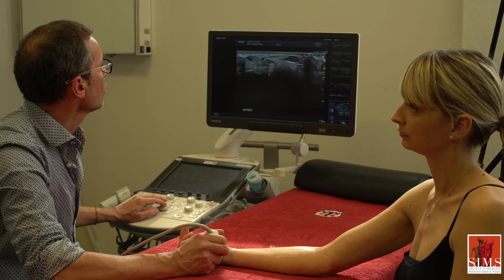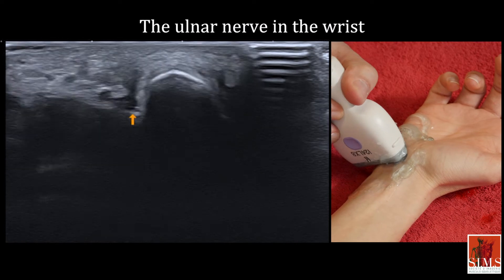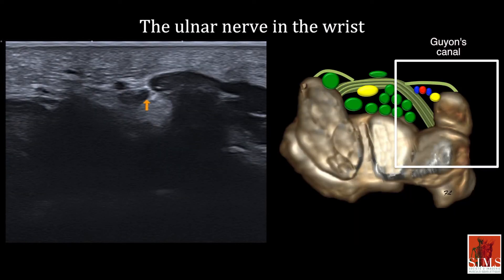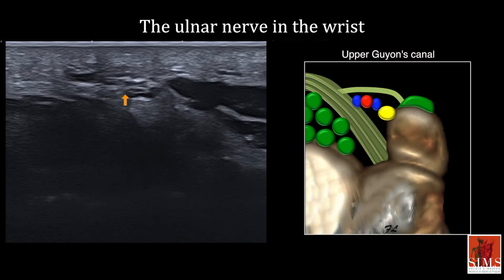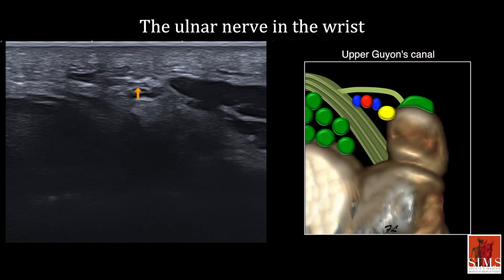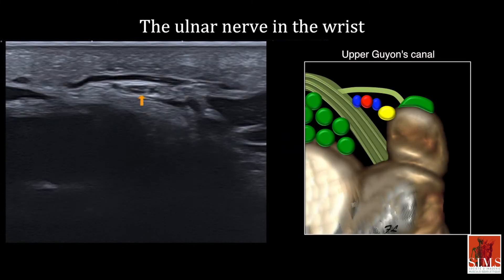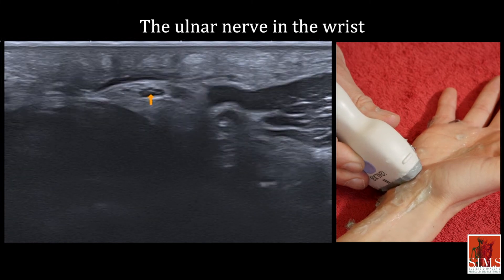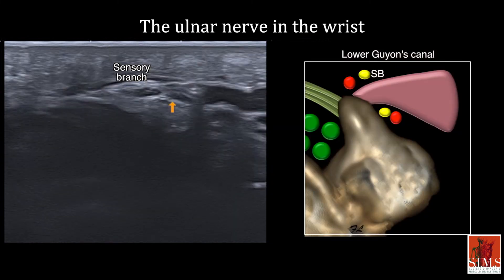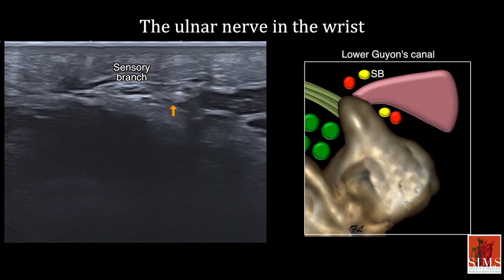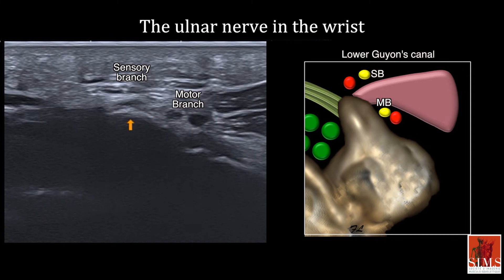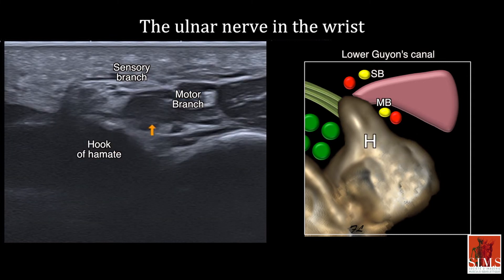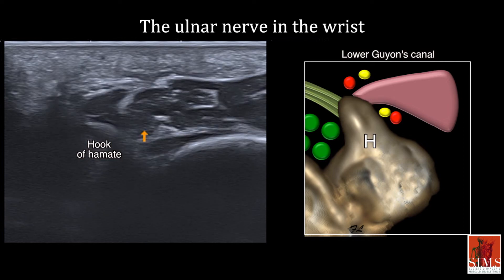At the wrist, the ulnar nerve heads towards an osteofibrous tunnel, Guyon's canal, and runs alongside the ulnar vessels. The terminal division of the ulnar nerve consists of a sensory branch and a motor branch that go down and around the hook of the hamate, which is lost quite quickly.